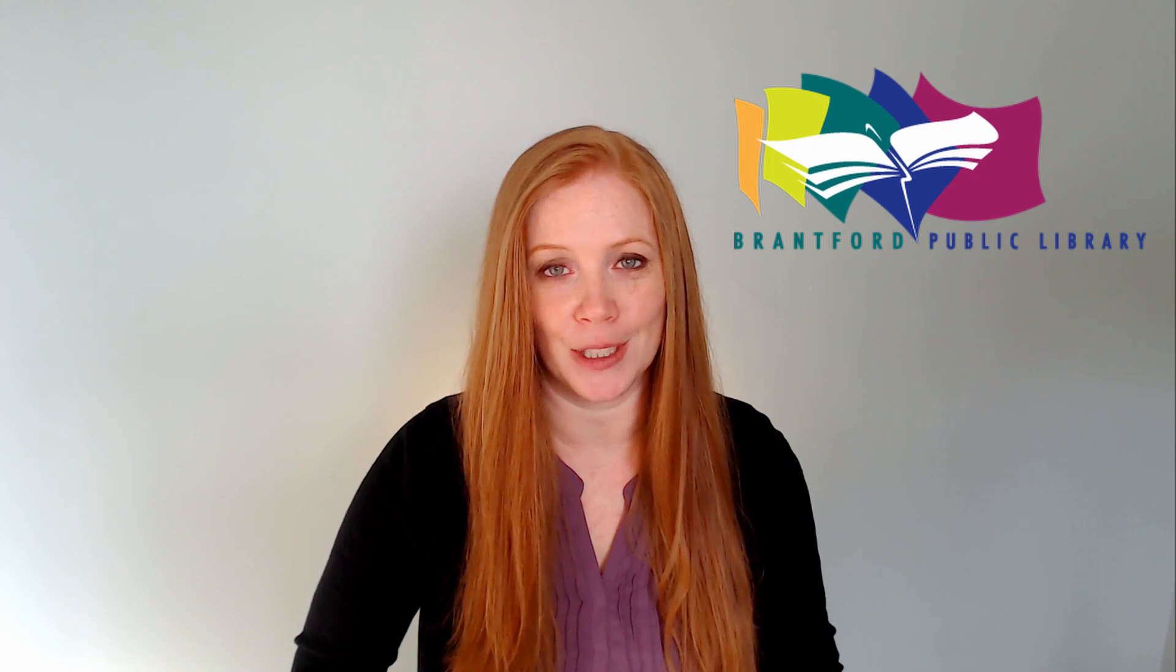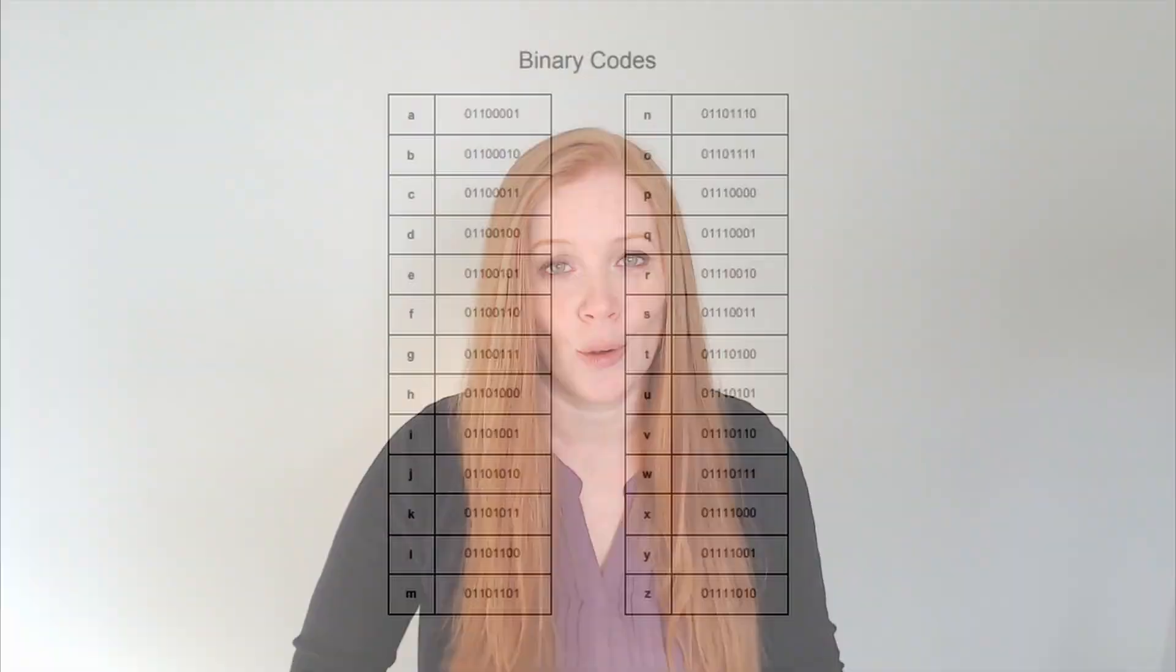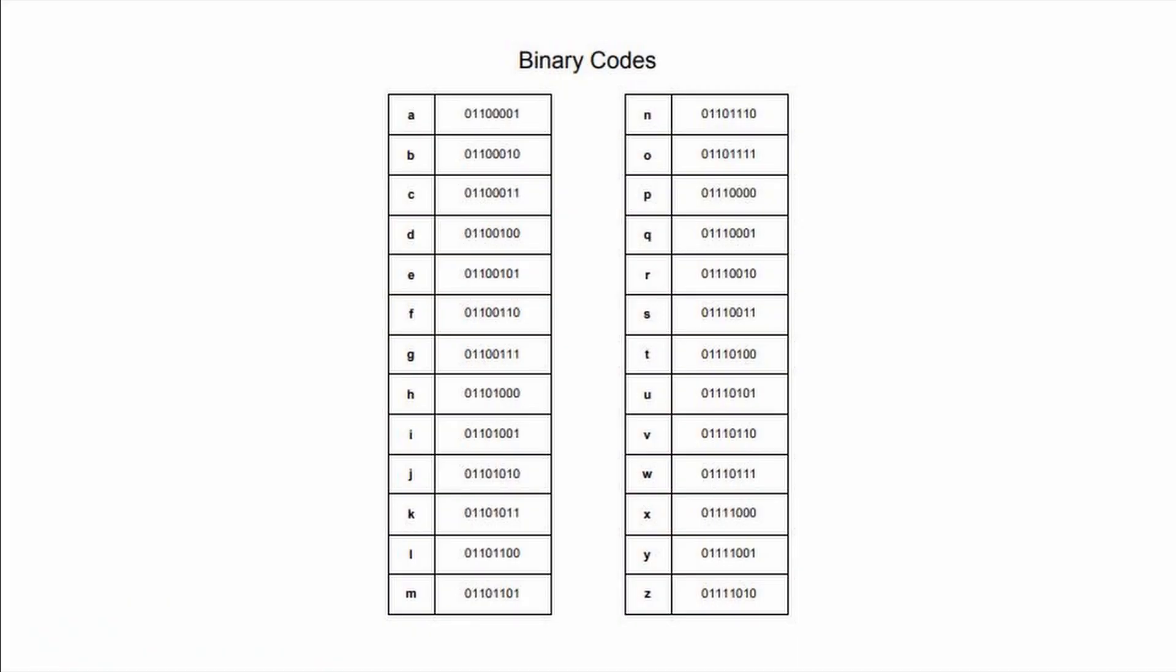For our secret code, we'll use binary code. Binary code is how computers understand letters, numbers, and symbols. Each one is represented by a pattern of eight electric pulses. For people, binary code is usually represented as ones and zeros. Can you think of another way? We're going to use color.